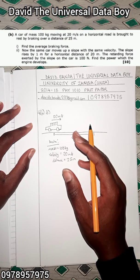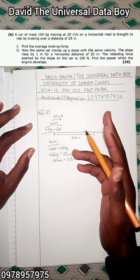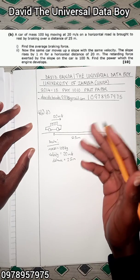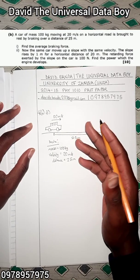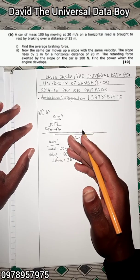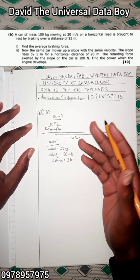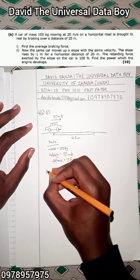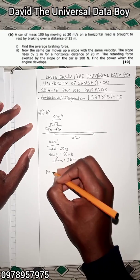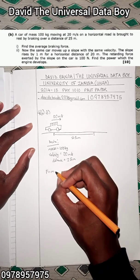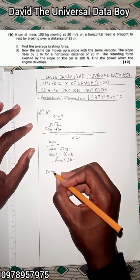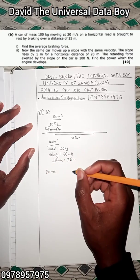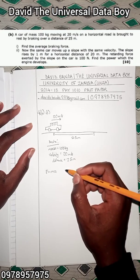There are two ways we can solve this. We can use Newton's laws of motion or we can use the principle of work and energy. Let's start with the Newton's laws approach. Newton's second law states that acceleration is directly proportional to the force and proportional to the mass in the direction of the force.